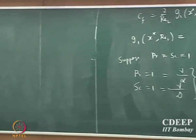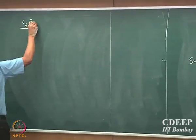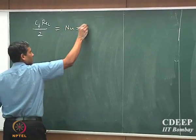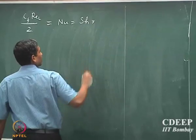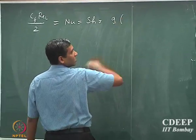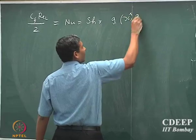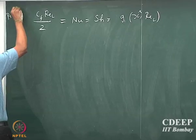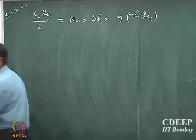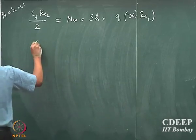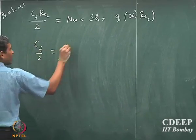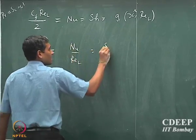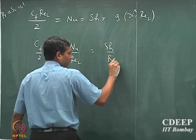For this particular case, we can assume that Cf into ReL by 2 equals V1(x*, ReL). Note that this is only when Prandtl number and Schmidt number are almost equal to 1. We can rewrite this as Cf/2 equal to Nu/ReL equal to Sherwood number by ReL.